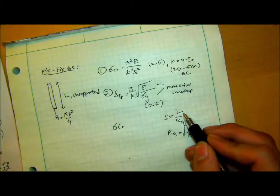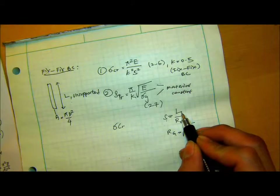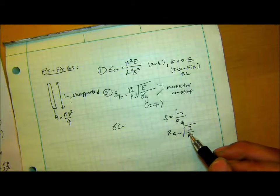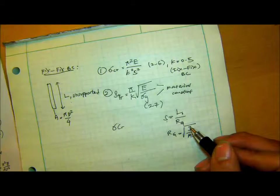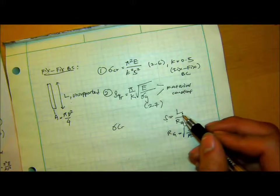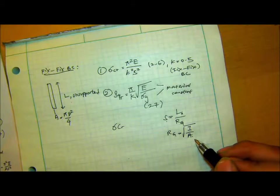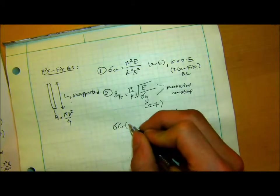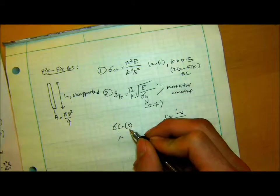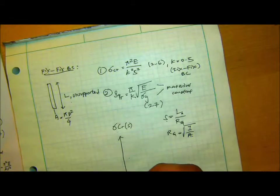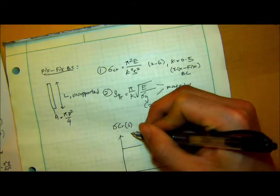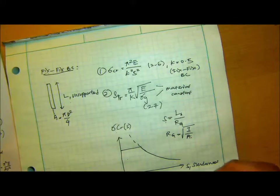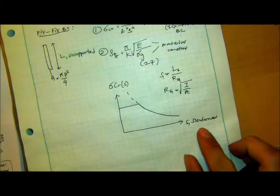And radius of gyration is just square root I over A. So you can see that S is proportional to length. And also proportional to the square root of A once you put it in. So basically, increasing the length will increase our S. So let me plot this first. So sigma critical is a function of S. So a slenderness doesn't have a unit. It's a normalized value. It doesn't have a unit.